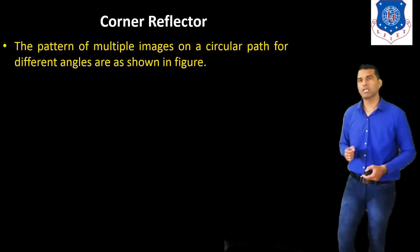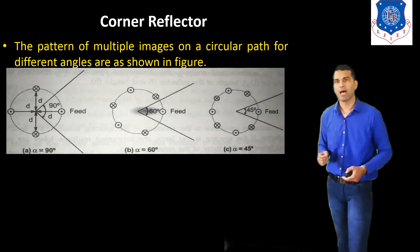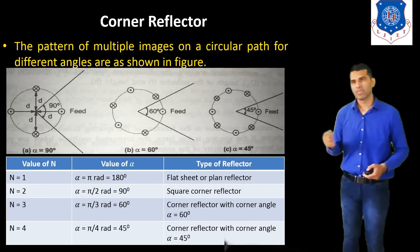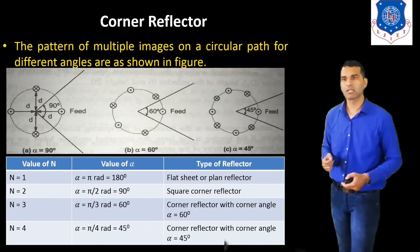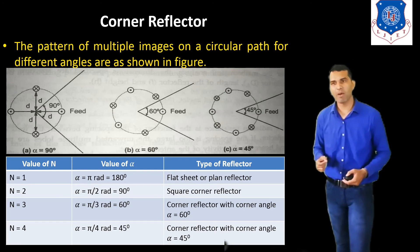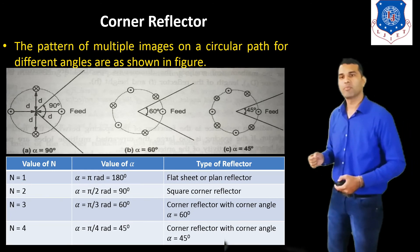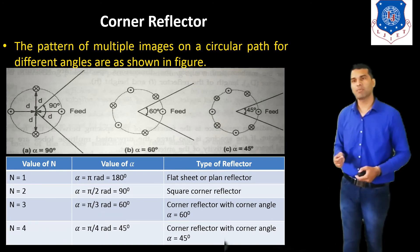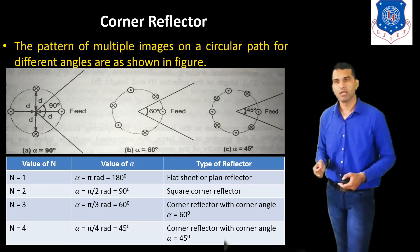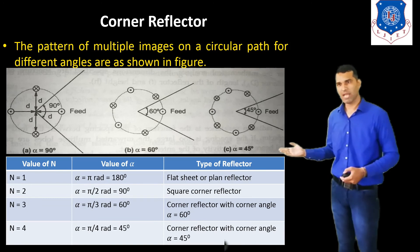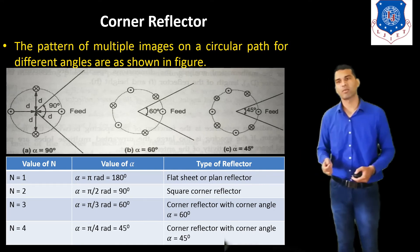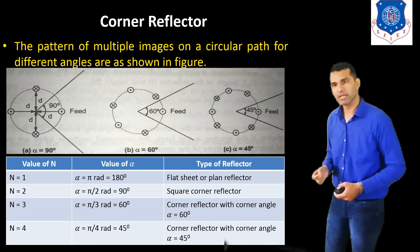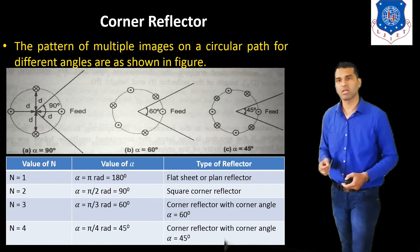The pattern of multiple images on the circular path for different angles is shown in the figure. For different values of N and alpha, we get different types of reflectors. When N=1 and alpha=180°, we get the flat sheet or plane reflector. When N=2 and alpha=90°, we get the square corner reflector. When N=3 and alpha=60°, we get the corner reflector with corner angle 60°. When N=4 and alpha=45°, we get the corner reflector with corner angle 45°.